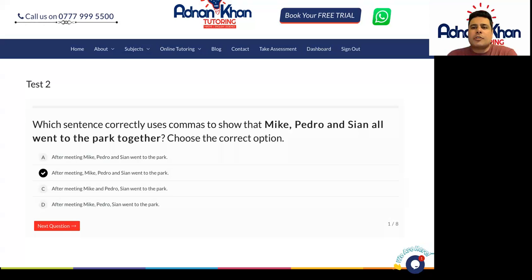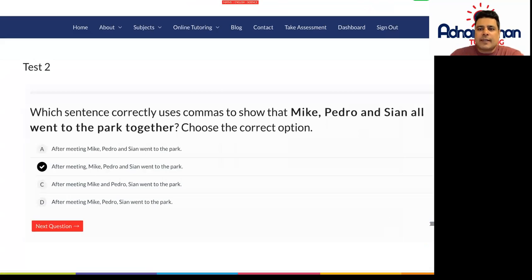Hi there and welcome to Grammar and Punctuation Year Six English Test Two. Which sentence correctly uses commas to show that Mike, Pedro and Sean all went to the park together? So if we have a look at these different options here, which one could it be?